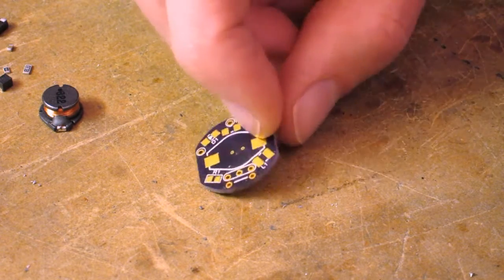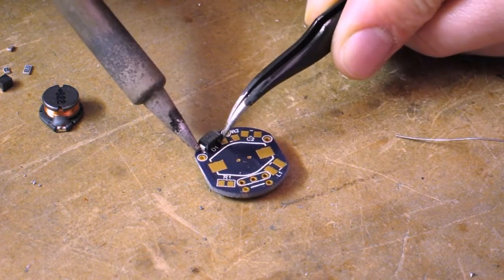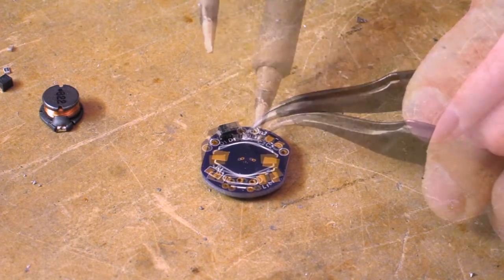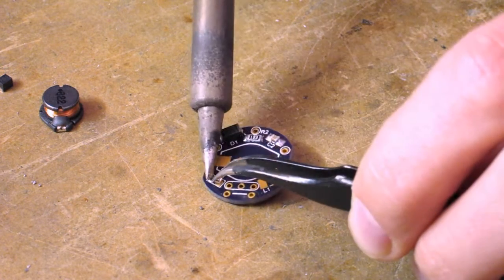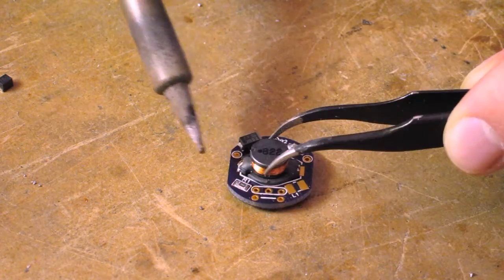Time to flip the board now. Solder the diode, the 10K resistor R2, the capacitor C2, R1, the 20K resistor, and finally, the coil.